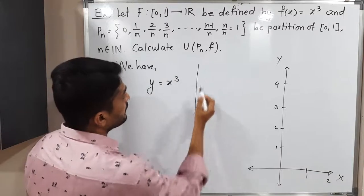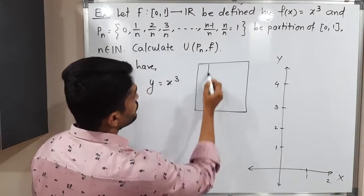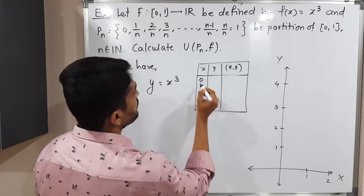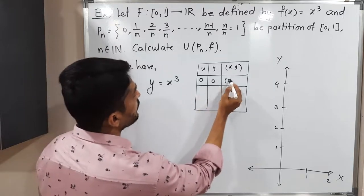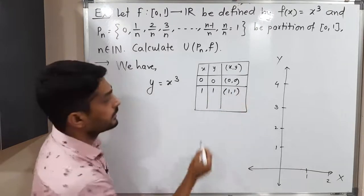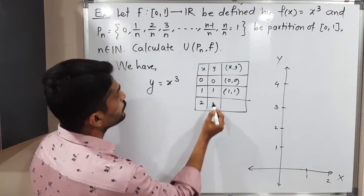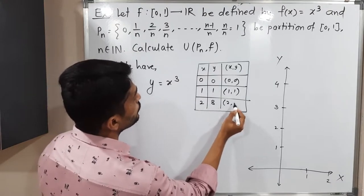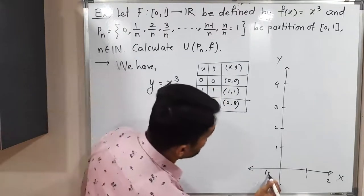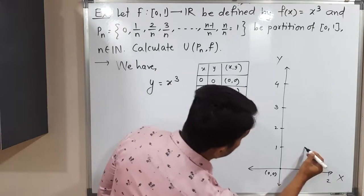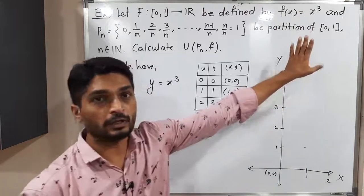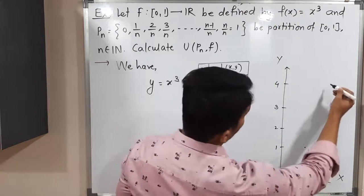I will draw a table to find multiple points. If x = 0, y = 0, giving point (0, 0). If x = 1, y = 1, giving point (1, 1). If x = 2, then 2³ = 8, giving point (2, 8). Plotting these: (0,0) is here, (1,1) is here, and (2, 8) is actually out of our diagram range, but we have understood how to draw the graph.